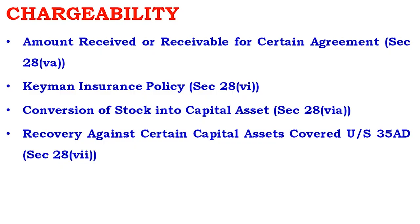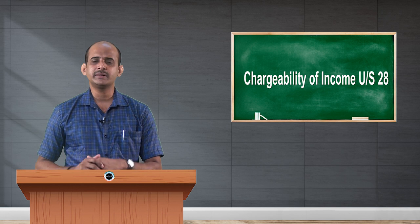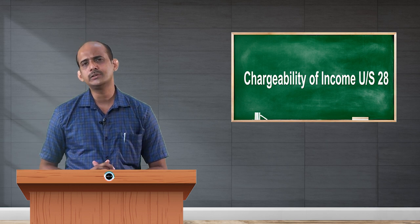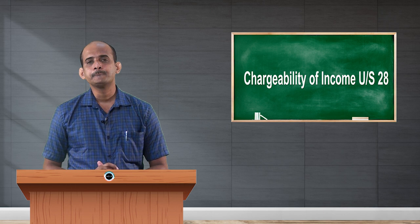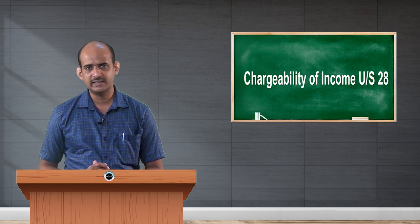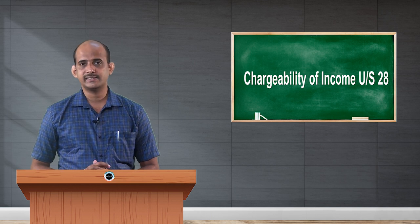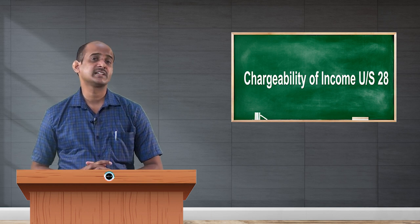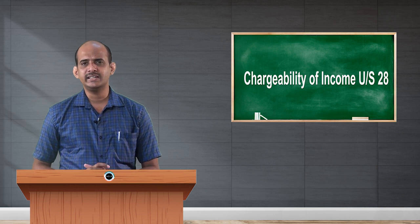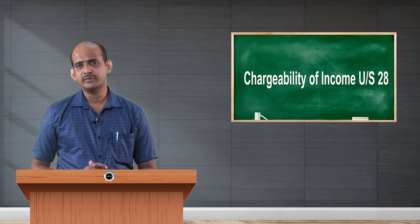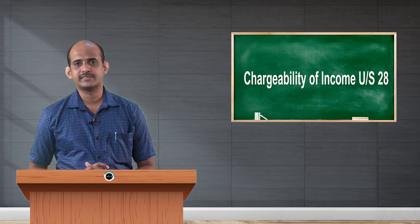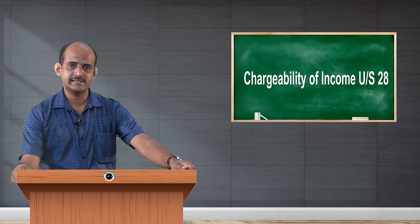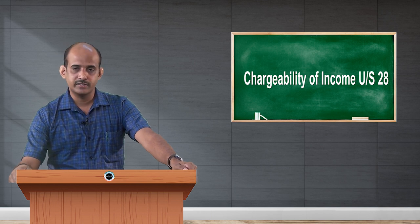Going forward — amount received or receivable for certain agreements. Sometimes, before taking up any business activity or during the course of business activity, it is quite normal to get into certain profitable agreements regarding tangible or intangible assets. When a person enters into profitable agreements, it is obvious to generate some income from such agreements. We may not see any exact execution of activity, but even before any activity is executed, by virtue of the agreement itself, there is a possibility of receiving or earning some income. Such incomes are recorded as income from business and profession under section 28(VA).